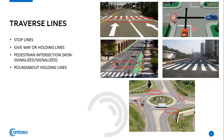The give way or holding lines can be seen at crossings. These are markings consisting of two adjacent broken white lines across the carriageway at which drivers must give way to all traffic in accordance with the standard sign.